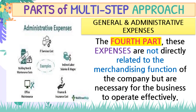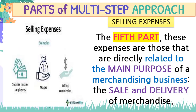After that, the fourth part is general and administrative expenses. These expenses are not directly related to the merchandising function of the company but are necessary for the business to operate effectively. For example: rent and maintenance cost of a building, direct labor, salaries and wages, and office maintenance — and this is for the office only, not for the merchandising function. The fifth part is selling expenses: those that are directly related to the main purpose of a merchandising business — the sale and delivery of merchandise.